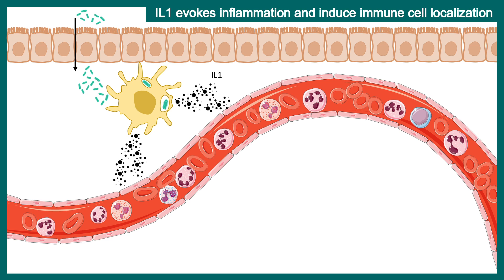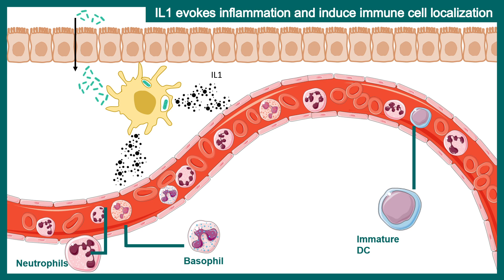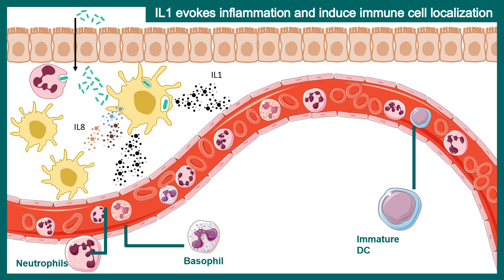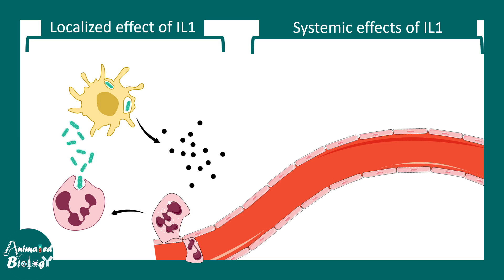To summarize, IL-1 acts on capillary endothelial cells, changes permeability, and leads to the extravasation of immune cells like neutrophils and monocytes. Neutrophils then secrete IL-1 or IL-18 to attract many other macrophages and dendritic cells to the site of infection — it's kind of like an alarm signal. The overall consequence is inflammation. This is the localized function of interleukin 1; the site of infection is the primary site of inflammation.